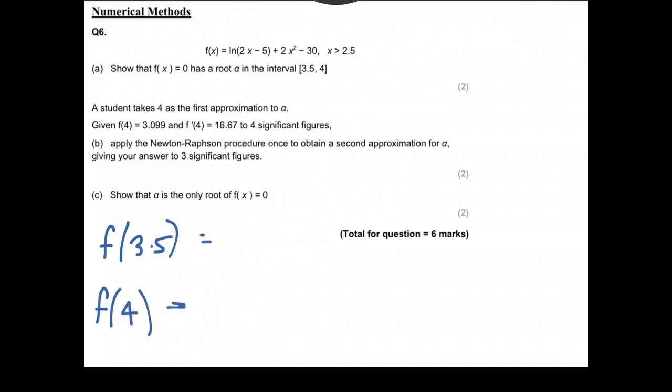Then put these into our calculator, being really careful of brackets. That's the only thing you can do wrong with these. We've got ln of the thing plus something else, so it shouldn't all be in one set of brackets. If I type that in and hit equals for 3.5, it rounds to minus 4.8.